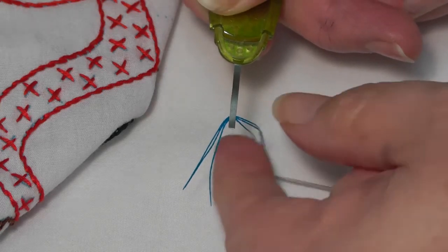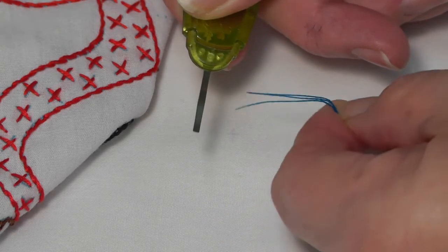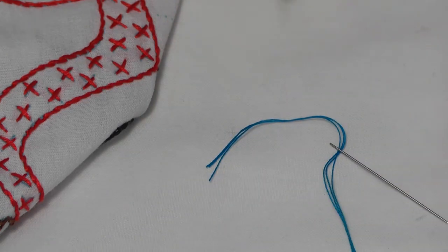After the needle is threaded, remove floss from embroidery threader by moving floss to the center and pulling out.